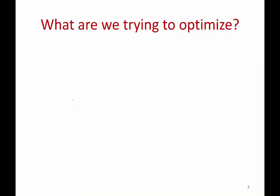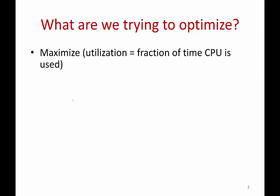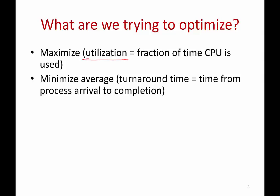A scheduler has certain goals it's trying to optimize. Of course, it tries to maximize CPU utilization — making sure the CPU is fully used as far as possible. It also tries to minimize the turnaround time of processes, which is the time from when a process is created and enters the system to the time it completes execution — the start to end of a process.